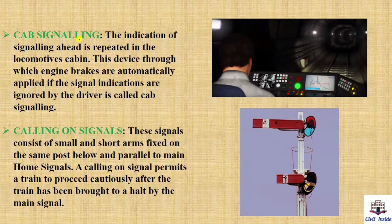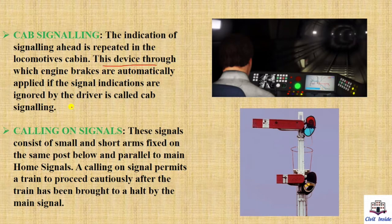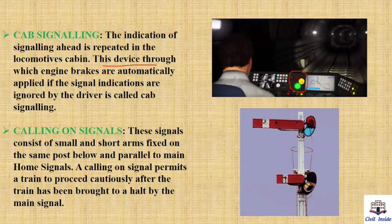First we have cab signaling. What is cab signaling? Indication of signaling ahead is repeated in the locomotive's cabin. This device through which engine brakes are automatically applied if the signal indications are ignored by the driver is called cab signaling. If there is a red signal ahead, the same indication shows to the driver inside the locomotive. If the driver ignores it, the brakes are automatically applied on the locomotive.